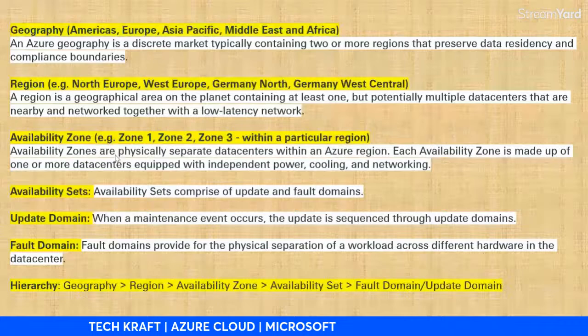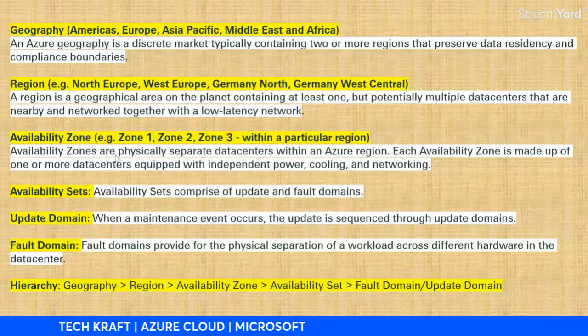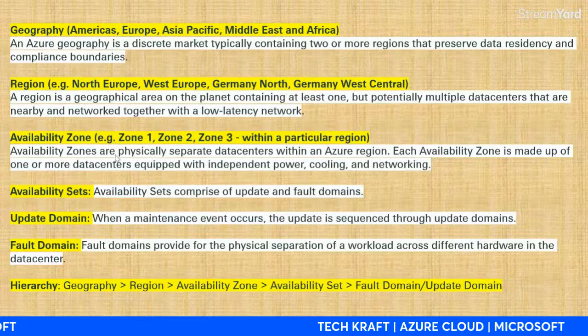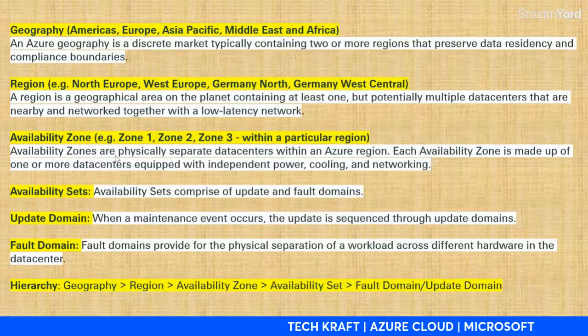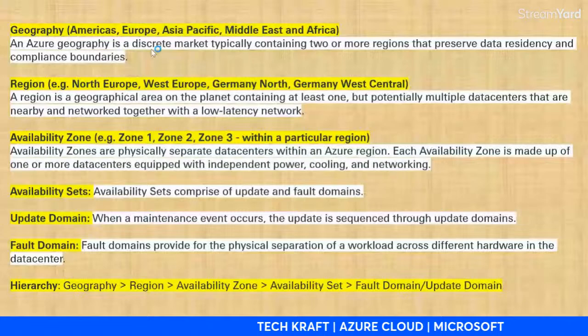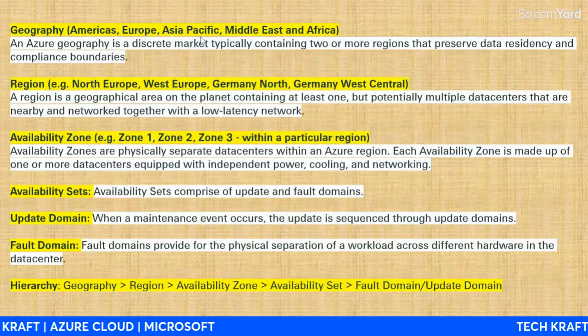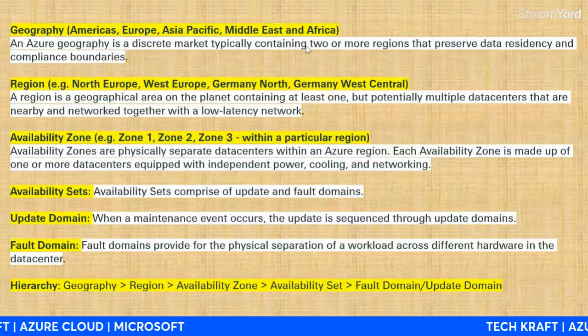Within each continent, regions are differentiated — for example, North Europe, West Europe, Germany North, Germany West Central, and North/South Virginia. In India, which is a subcontinent, there are four regions: North, South, East, and West India. Within those regions, availability zones can be subdivided further — for example, South India could have Andhra Pradesh as zone 1, Telangana zone 2, Tamil Nadu zone 3, Karnataka zone 4, and Kerala zone 5.